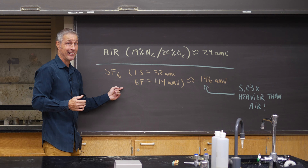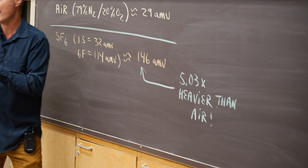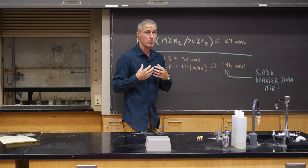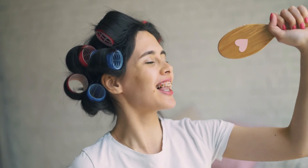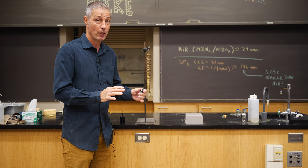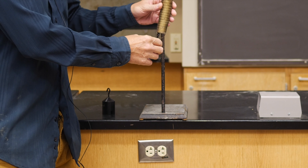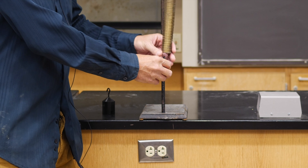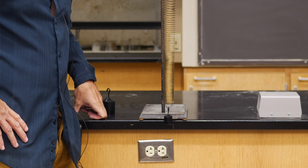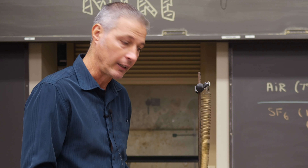So why do they call it the anti-helium? That's because it's way heavier than air. Air is about 79% nitrogen, 21% oxygen, a little bit of argon, and it weighs about 29 atomic mass units. The sulfur in sulfur hexafluoride weighs more than air — tack on six fluorines, you've got something that weighs about 5.03 times heavier than air.